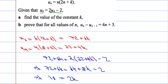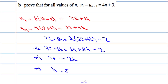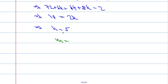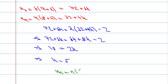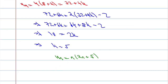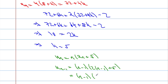So k equals 5. Now it says prove that for all values of n, u(n) minus u(n minus 1) equals 4n plus 3. Let's write down the rule again: u(n) equals n times (2n plus 5). And u(n minus 1): substituting n minus 1 for n gives us (n minus 1) times (2(n minus 1) plus 5), which is (n minus 1) times (2n minus 2 plus 5), which is (n minus 1) times (2n plus 3).